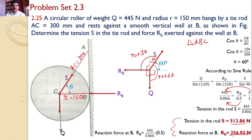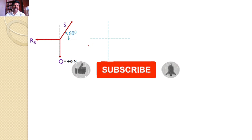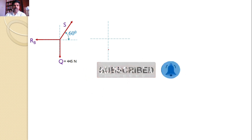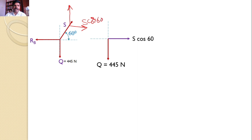We can also solve this problem using the concept of resolution of forces. I have prepared a separate video on the concept of resolution of forces — please watch it from RK Tutorials. Now let us resolve all three forces onto the XY axis. Q is along the Y axis, so there is no need to resolve it. For S, since it makes an angle of 60 degrees with the horizontal, the horizontal component is S cos 60 and the vertical component is S sin 60.